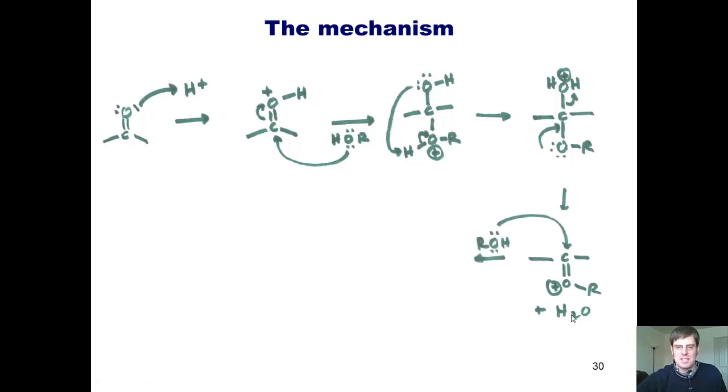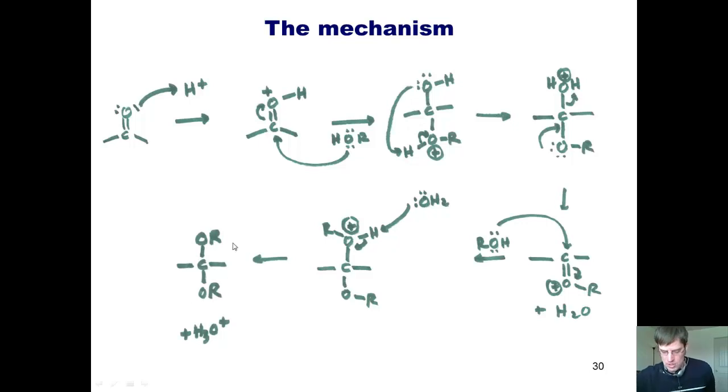At this stage, a second molecule of alcohol comes into the carbonyl carbon and thrusts these electrons into the oxygen to neutralize that charge. That gives me this type of intermediate. To get rid of this positive charge on this oxygen, the water molecule that was generated in the previous step comes and deprotonates it and thrusts these electrons into that oxygen to neutralize that charge. That then gives me my final product, which is called an acetal and releases protonated water, hydronium, as a byproduct. This source of acid can then act as the acid source to catalyze a second cycle of this reaction.